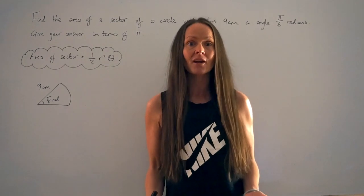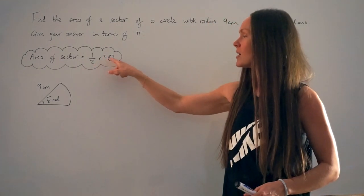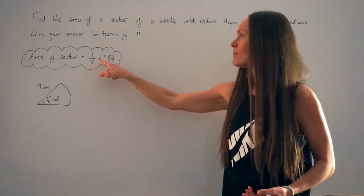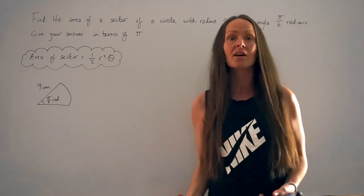So to calculate the area of this sector I'm going to use this formula here: a half r squared theta. We have to multiply a half by the radius squared and then multiply this with the angle theta which must be in radians.